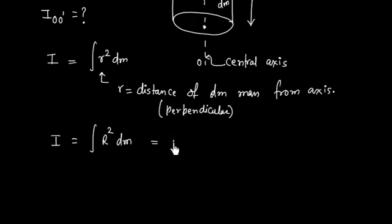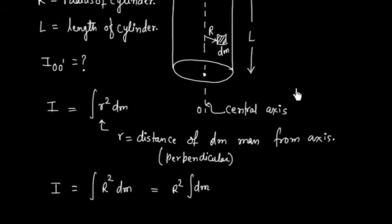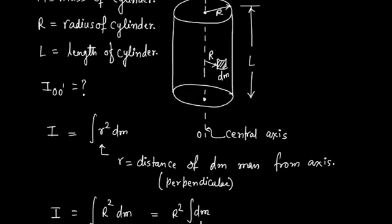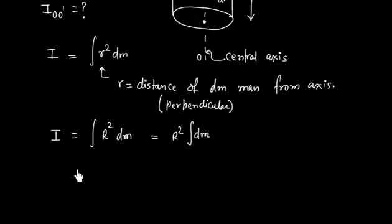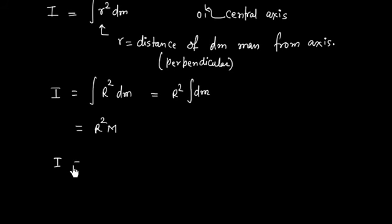Now R is constant, so we can take it outside the integral. The integral of dm gives us the total mass of the cylinder. So if we integrate dm we get the total mass M. Therefore, the moment of inertia about OO dash is MR squared.